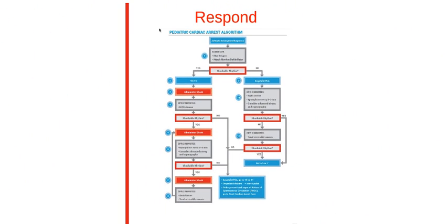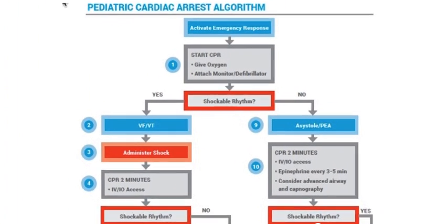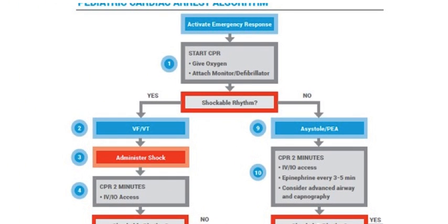Respond with the pediatric cardiac arrest algorithm. Activate emergency response, start CPR, give oxygen, and attach the monitor and defibrillator. If there is a shockable rhythm — V-fib or V-tach — administer shock, do CPR for two minutes, obtain IV or IO access, and check again for a shockable rhythm.